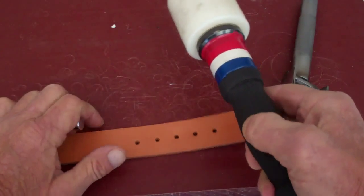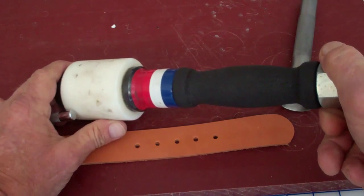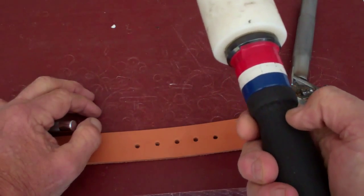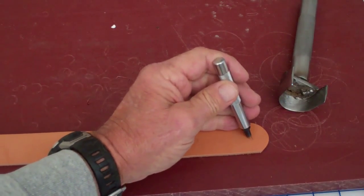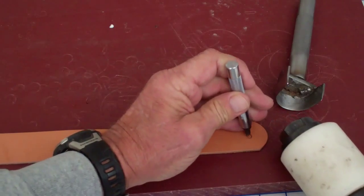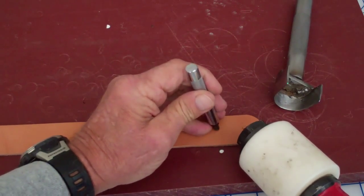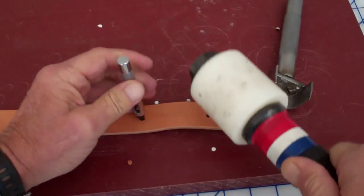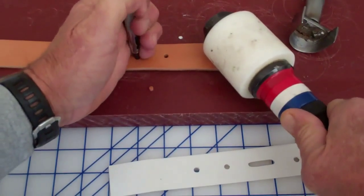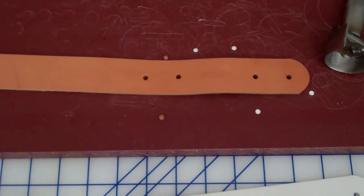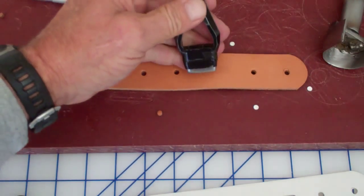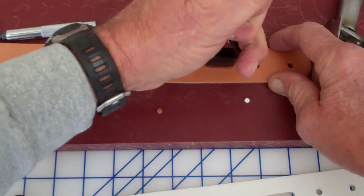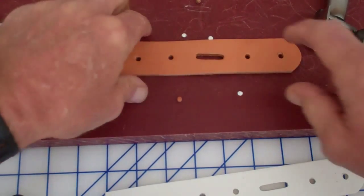This is a mallet that I bought at Tandy Leather about 20 years ago, 15 years ago I guess. They still sell them, but they call them the Al Stolman hammers. It's a nice heavyweight plastic head mallet. Now we'll use our oblong punch.